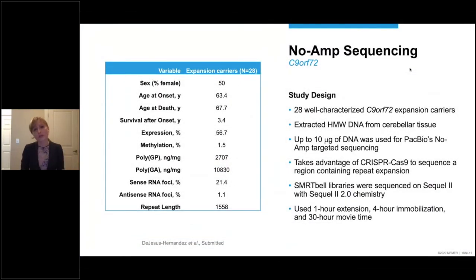And we selected one of these technologies, no-amp sequencing developed by PacBio. And we selected 28 well-characterized C9ORF72 expansion carriers, 50% female, an age at onset of 63 years. And we obtained their expression levels, methylation levels, RNA foci levels, dipeptide repeat protein levels, the length of the C9ORF72 expansion based on southern blotting, etc.